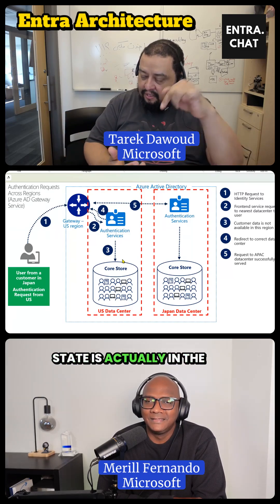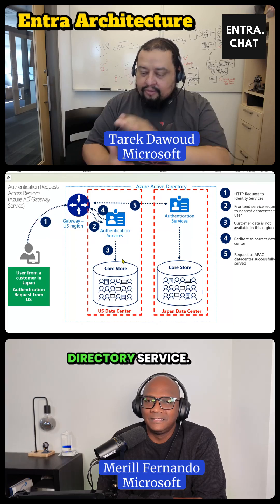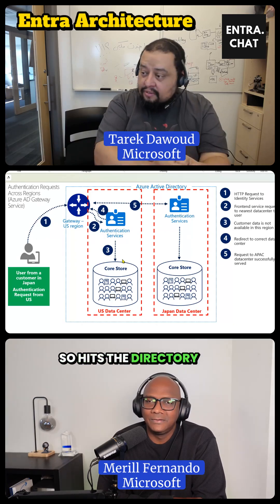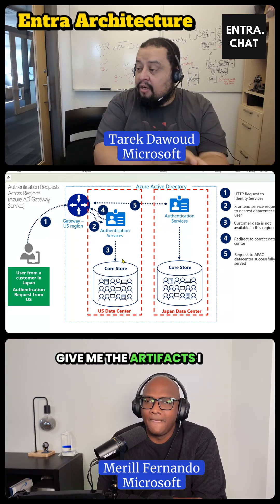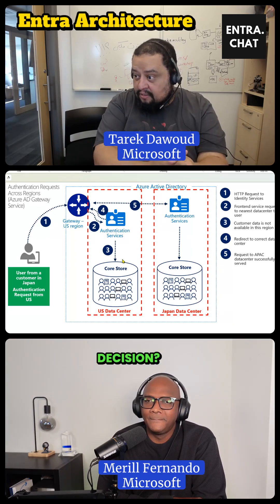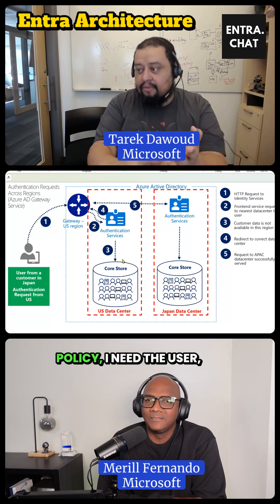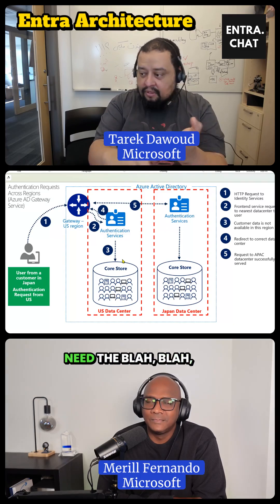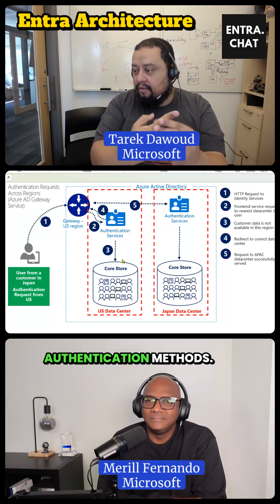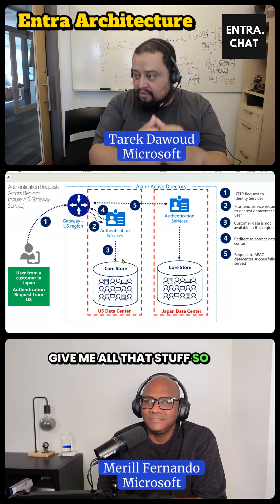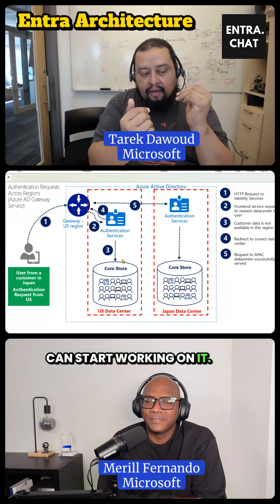State is actually in the directory service. So it hits the directory service and says, can you give me the artifacts I need to make this decision? I need the app, I need the conditional access policy, I need the user, the authentication methods — give me all that stuff so I can start working on it.